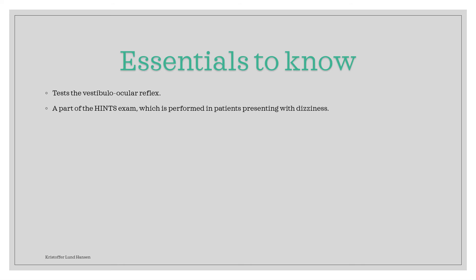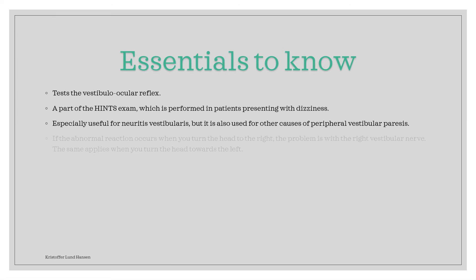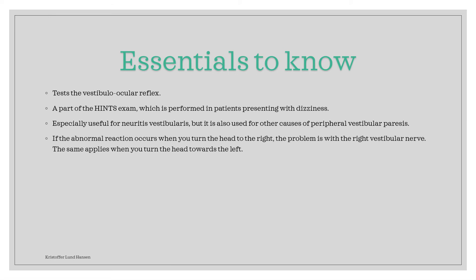All of these are useful in patients presenting with dizziness. This test specifically is most useful for vestibular neuritis. However, it will also give abnormal results in other cases that cause paresis of the vestibular nerve. If we move the patient's head towards the right and they have an abnormal result, this means that the problem is with the right vestibular nerve — right is right. This also applies for the left side: if we move the head towards the left and get an abnormal result, then the problem is with the left vestibular nerve.